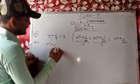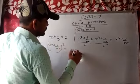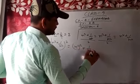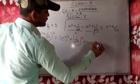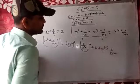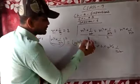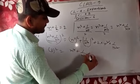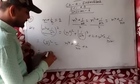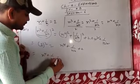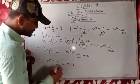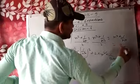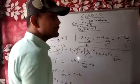For x to the power 4 plus 1 by x to the power 4: using x squared plus 1 by x squared whole square equals x to the power 4 plus 1 by x to the power 4 plus 2 into x squared into 1 by x squared, and the value of x squared plus 1 by x squared is 2: 2 squared equals 4 equals x to the power 4 plus 1 by x to the power 4 plus 2. So x to the power 4 plus 1 by x to the power 4 equals 2. All three are equal to 2.